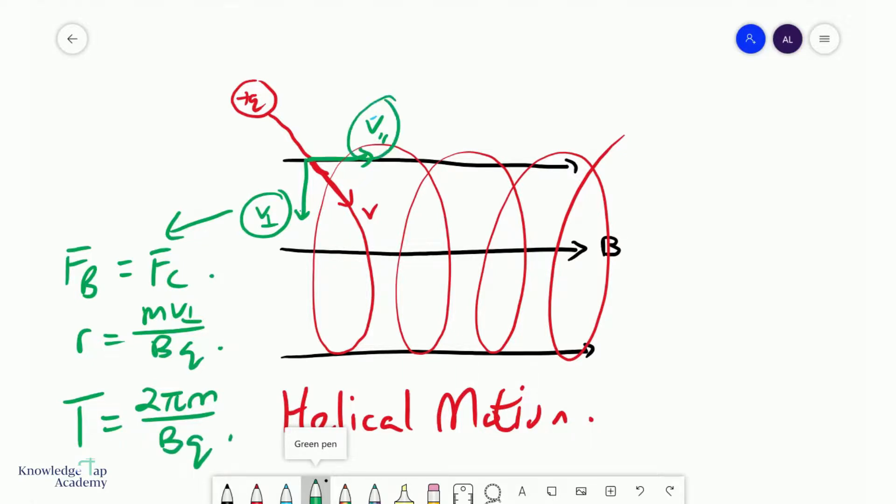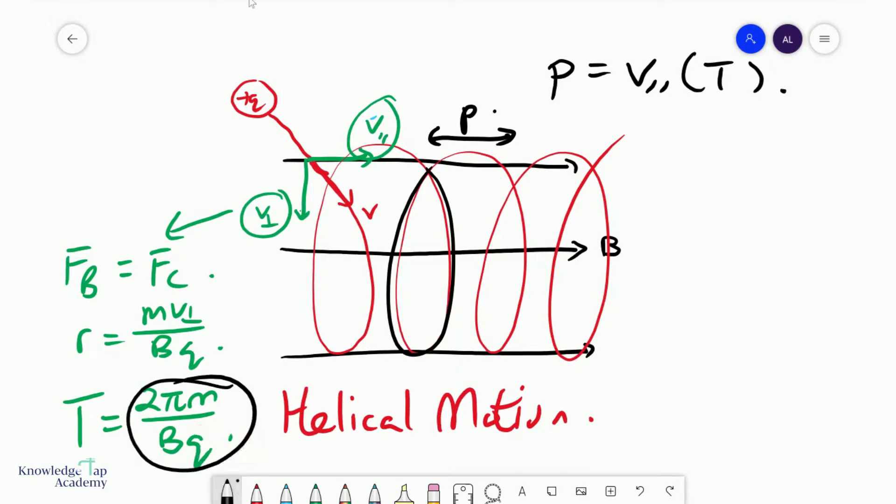V parallel simply means that it's traveling at a constant speed, and so one interesting result that we can get from this is something called the pitch. So the pitch is just the distance between consecutive loops, and if you are quite aware of how this works, the pitch will simply be V parallel multiplied by the time taken to complete one loop, which is none other than the period, 2 pi M over QB.